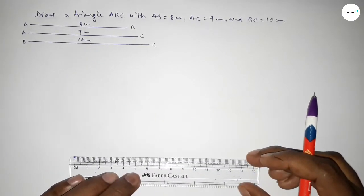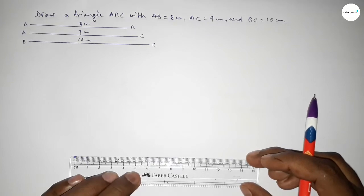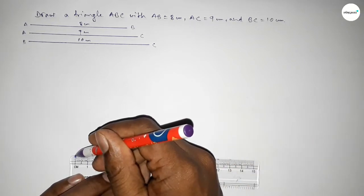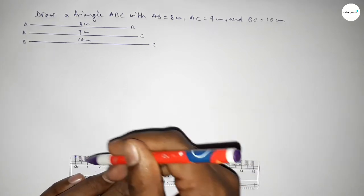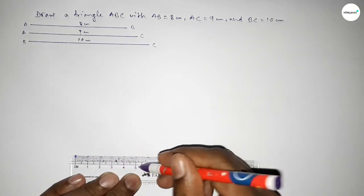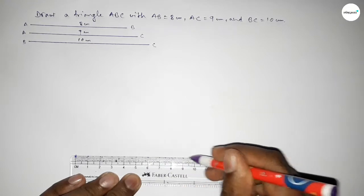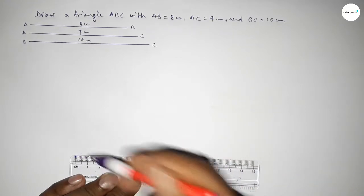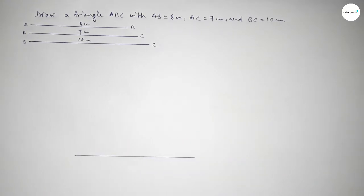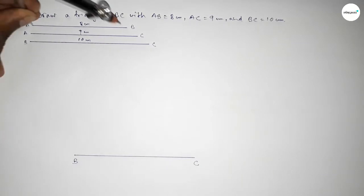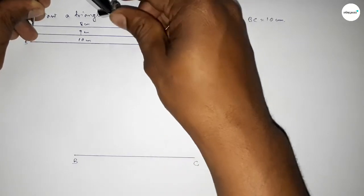Now first we have to draw a line of length 10 centimeters. So drawing here a line of length 10 centimeters. This is 10 centimeters, taking here point B and here point C.